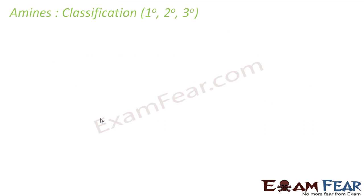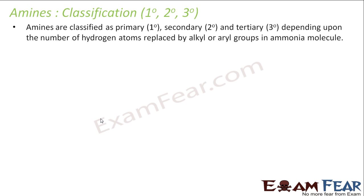Now we'll talk about the classification of amines. Amines are classified as first, second, and third degree — that is, primary, secondary, or tertiary — depending on the number of hydrogens that are replaced by an alkyl or aryl group in ammonia.